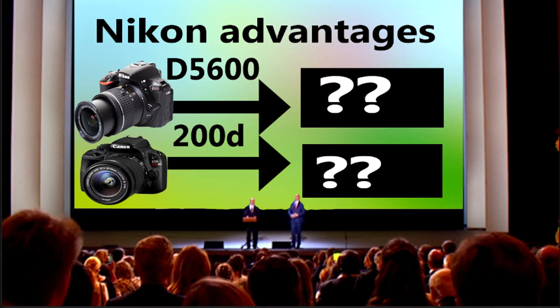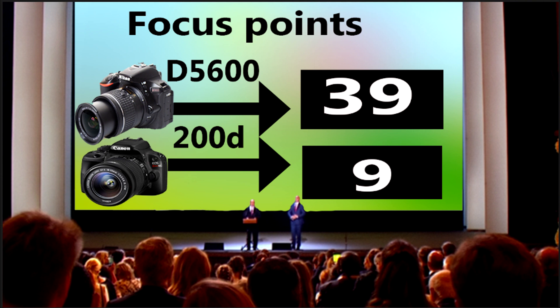First, we will talk about the advantages of the Nikon D5600 over the Canon 200D. The first advantage is focus points — Nikon gives you 39 focus points and Canon gives you only 9 focus points.